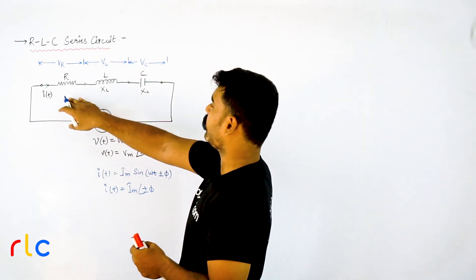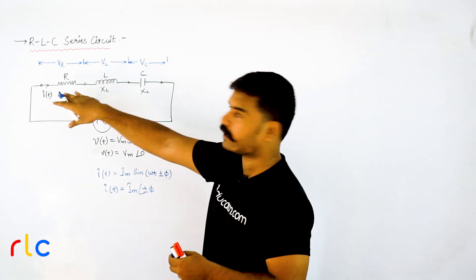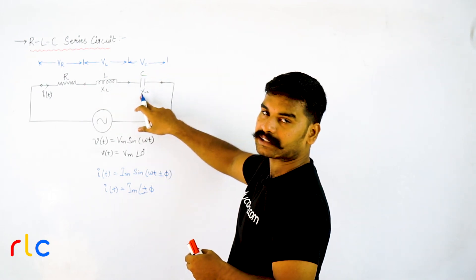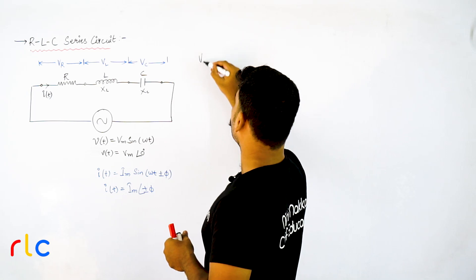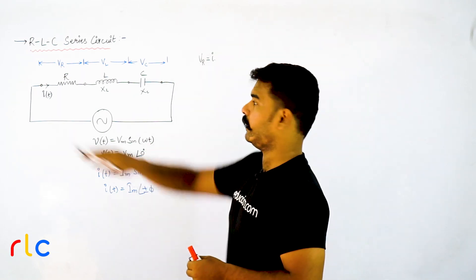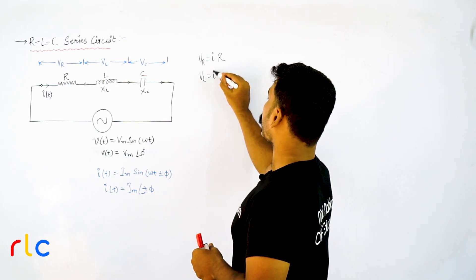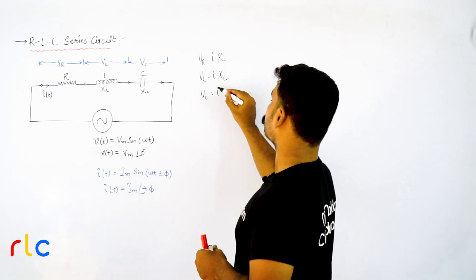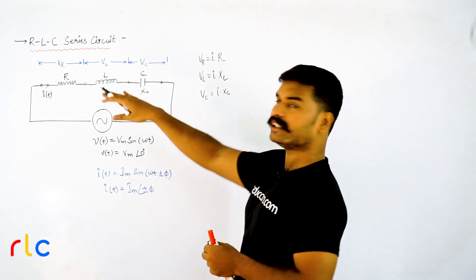I am applying some total voltage V of T, and this total voltage is dropped or shared by the series-connected elements. The resistor drops VR, the inductor has its own reactance XL which drops voltage VL, and the capacitor has its own reactance XC dropping voltage VC. Applying Ohm's law: VR = I × R, VL = I × XL, and VC = I × XC.